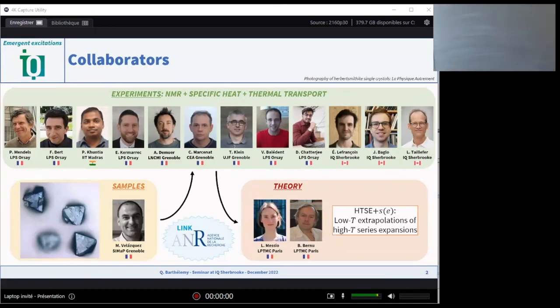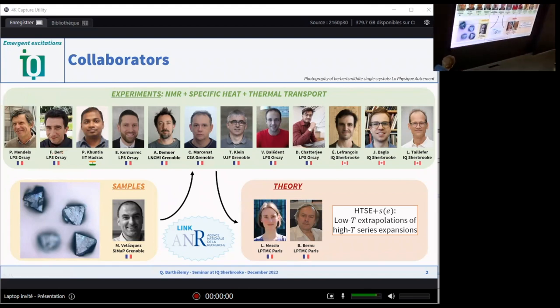Okay, so first of all, I would like to thank all the people involved in these studies of Herbertsmithite. For me, it started doing my PhD at LPS in France with Philippe Mendels and Fabrice Bert. We did some NMR study and also a specific heat study at high magnetic fields with the help of Albin de Visser, Christophe Marcenat, and Thierry Klein. Now I am here in Sherbrooke. We did some thermal transport measurements with Étienne Lefrançois and Jordan Baglo in the group of Louis Taillefer. Our samples come from Matthias Velasquez in Grenoble, and on the theory side, we have a very nice collaboration with Laura Messio and Bernard Bernu in Paris. We developed a numerical technique, which is low temperature extrapolations of high temperature series expansions for the susceptibility and the specific heat, for instance.